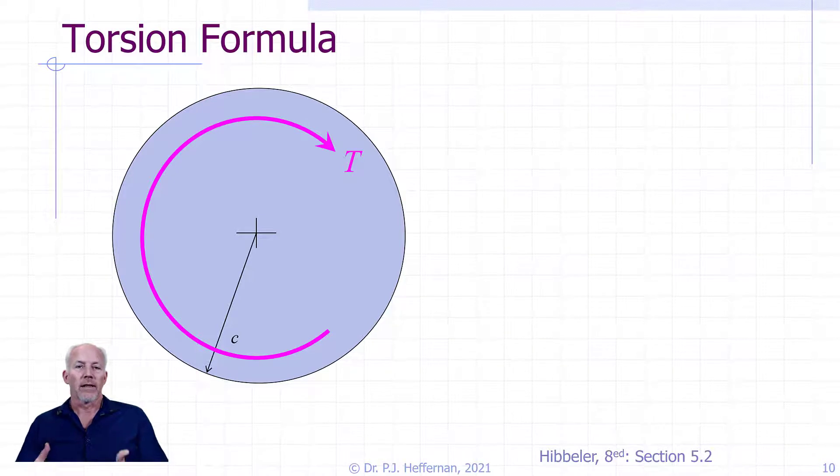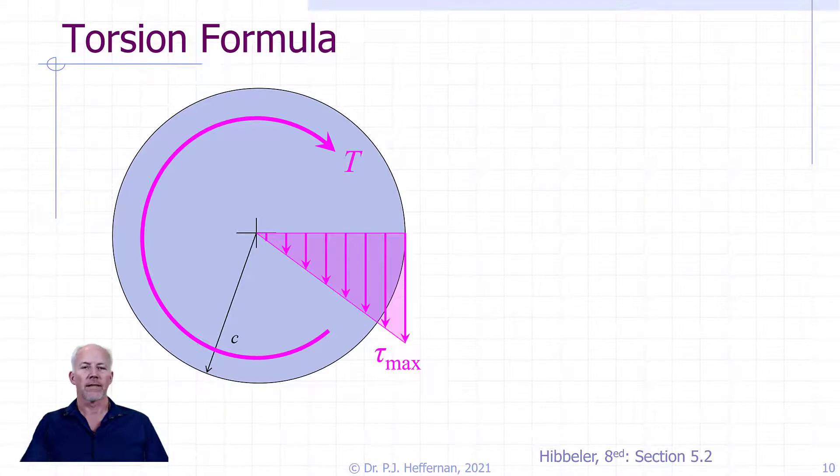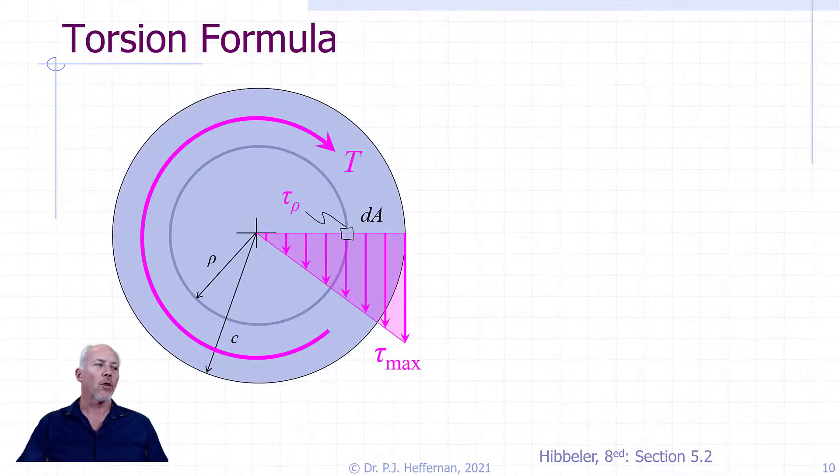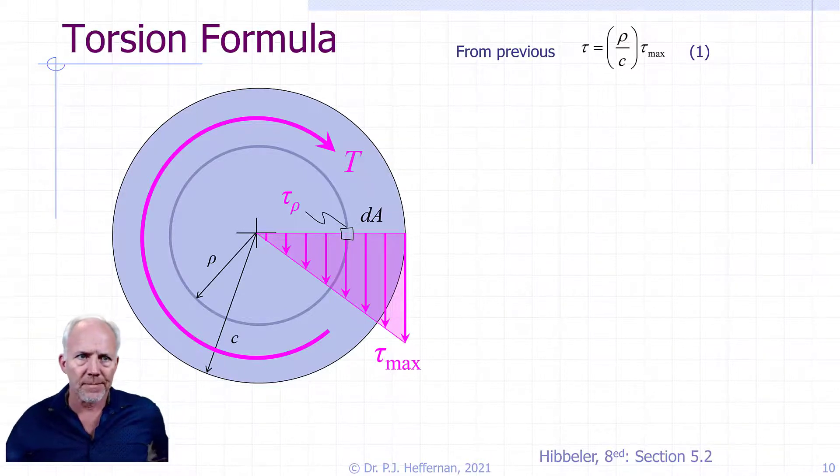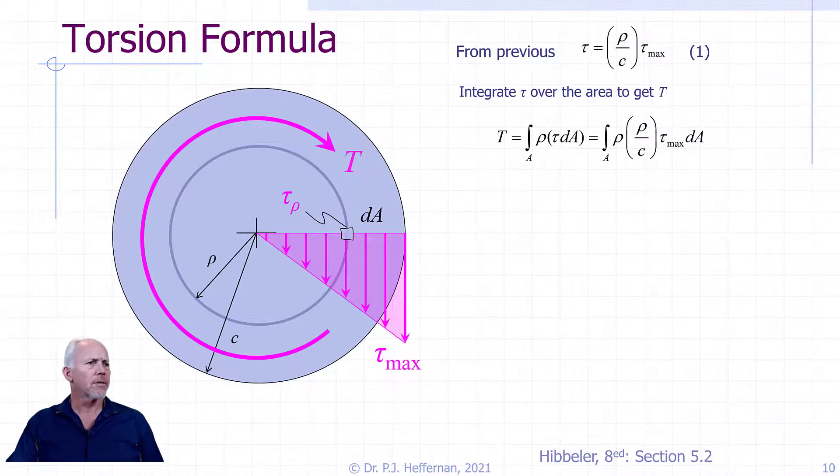So let's see if we can't get a formula that will allow us to calculate our shear stresses resulting from our internal torque, T. So we have our cross-section, a radius C, and our internal torque applied, T. And we know that the shear stresses resulting from that torque will vary linearly from the center out to the maximum at the outer edge. So if we consider a differential element dA, a distance rho from the center, and on it will be our shear stress tau at rho. So from the previous slide, we know that tau is equal to the ratio rho to C multiplied by our maximum shear stress. And we'll call that equation one.